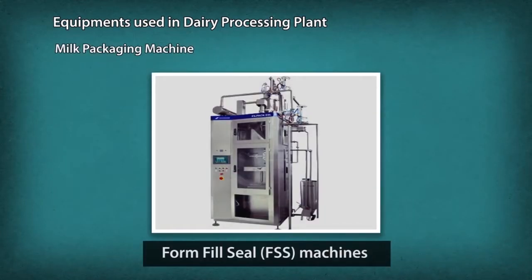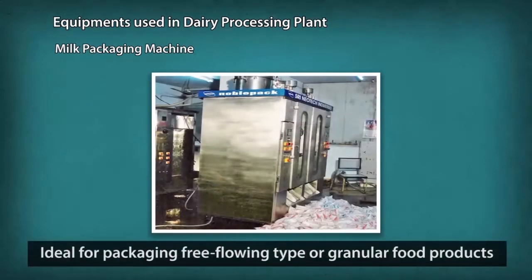Milk Packaging Machine: Most dairy processing plants use the form fill seal to package processed milk and milk products. This machine is ideal equipment for packaging free-flowing type or granular food products.